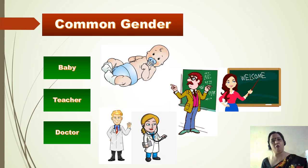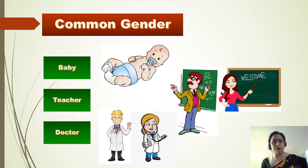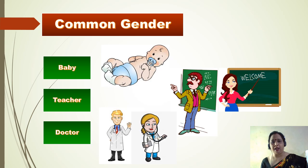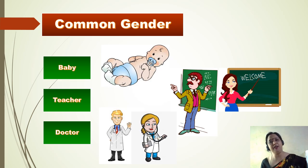I would like to discuss one more example for common gender. One of my friends was treated by a doctor, but I don't know whether it was a male doctor or a female doctor. Hence, common genders are naming words that can be used for both males and females. For example, 'my teacher is teaching me English' — the word teacher can refer to a male teacher or a female teacher.